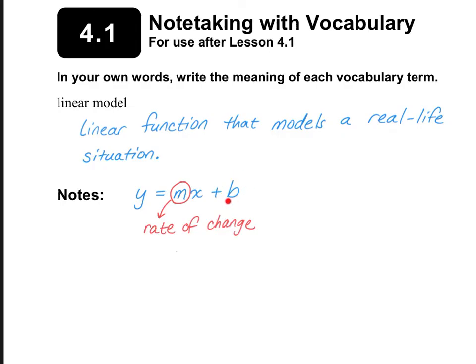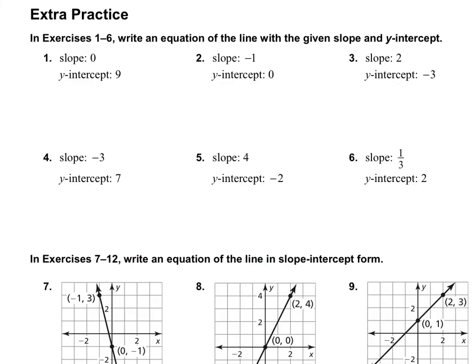The b in this case is your starting point — that's how much you have at the beginning. Let's do some examples starting on page 99.